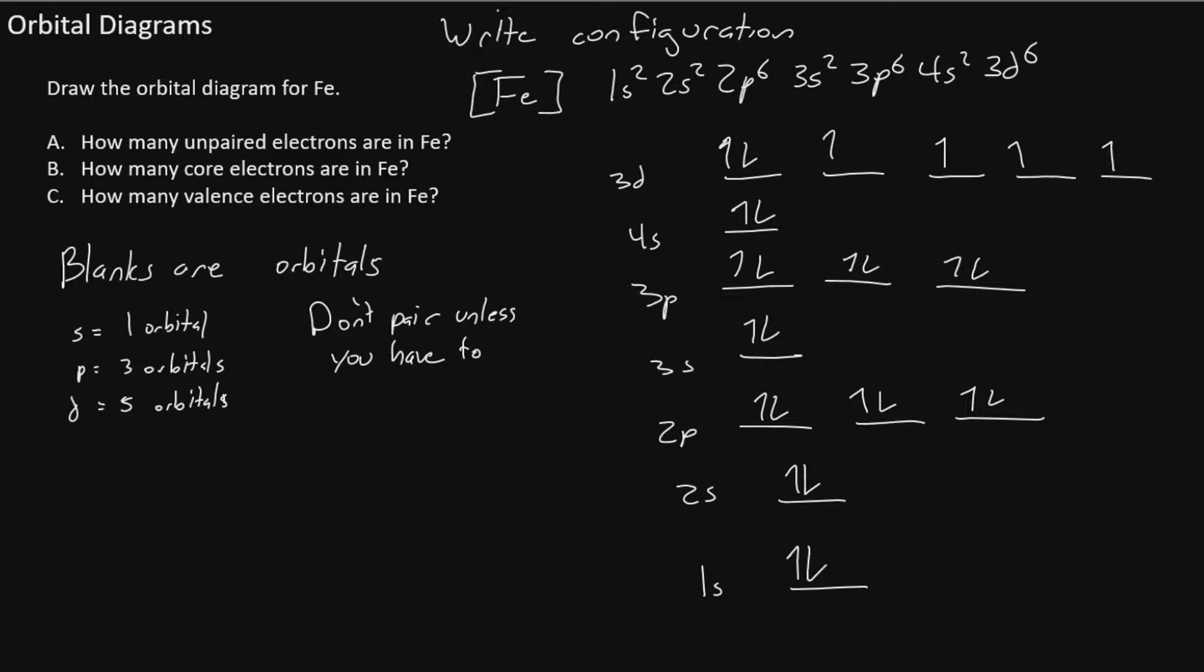So this will be our orbital diagram. Now we are asked how many unpaired electrons there are in iron. It seems most of our electrons have pairs, but our unpaired electrons are the ones that are by themselves and pointed up. So we'll say we have 1, 2, 3, 4 unpaired electrons.